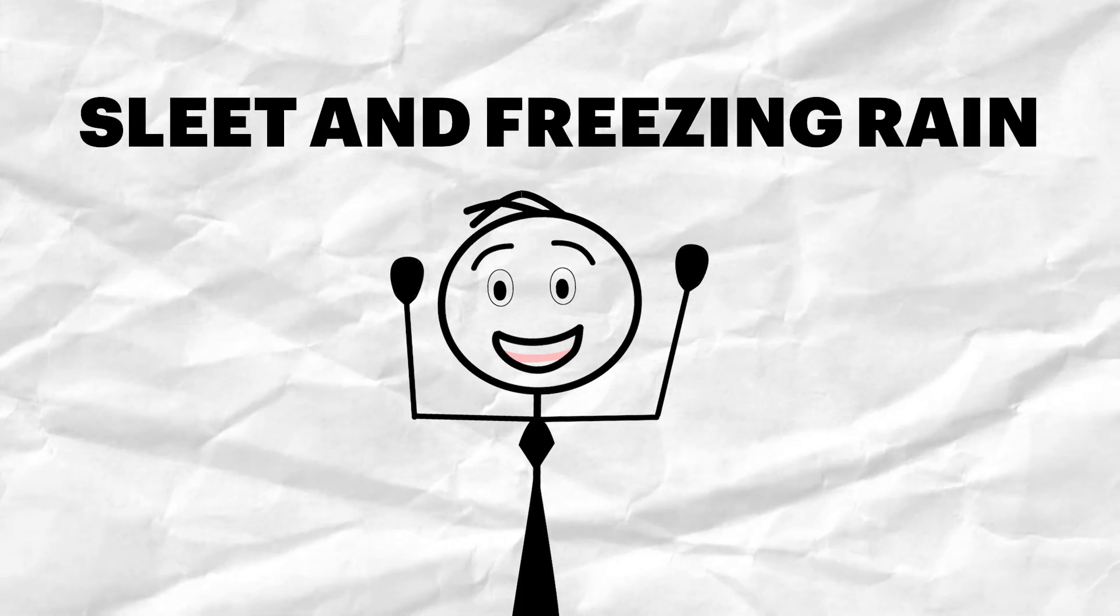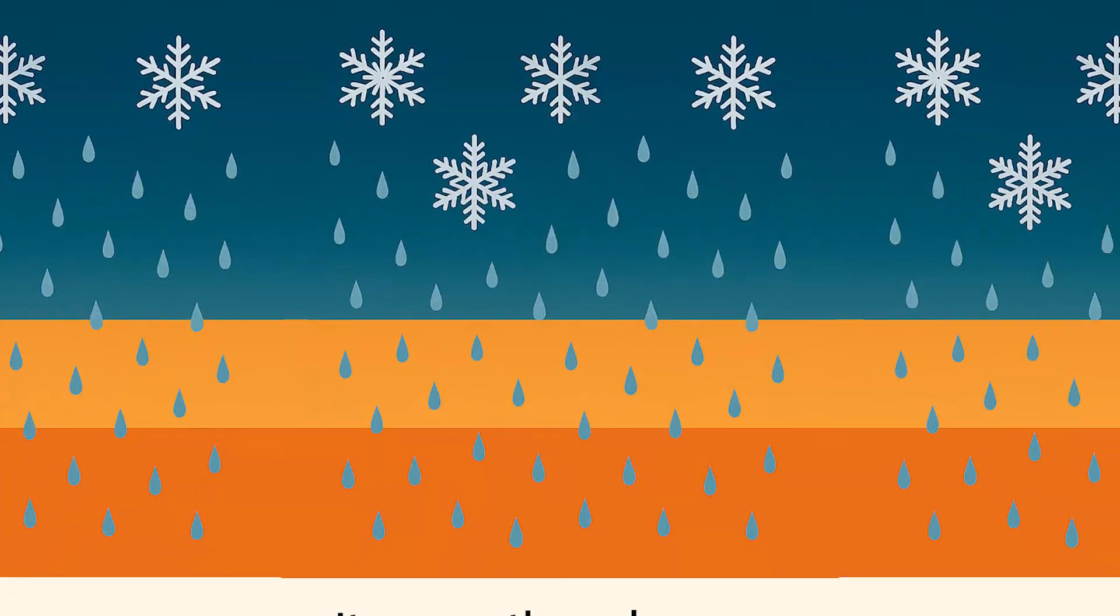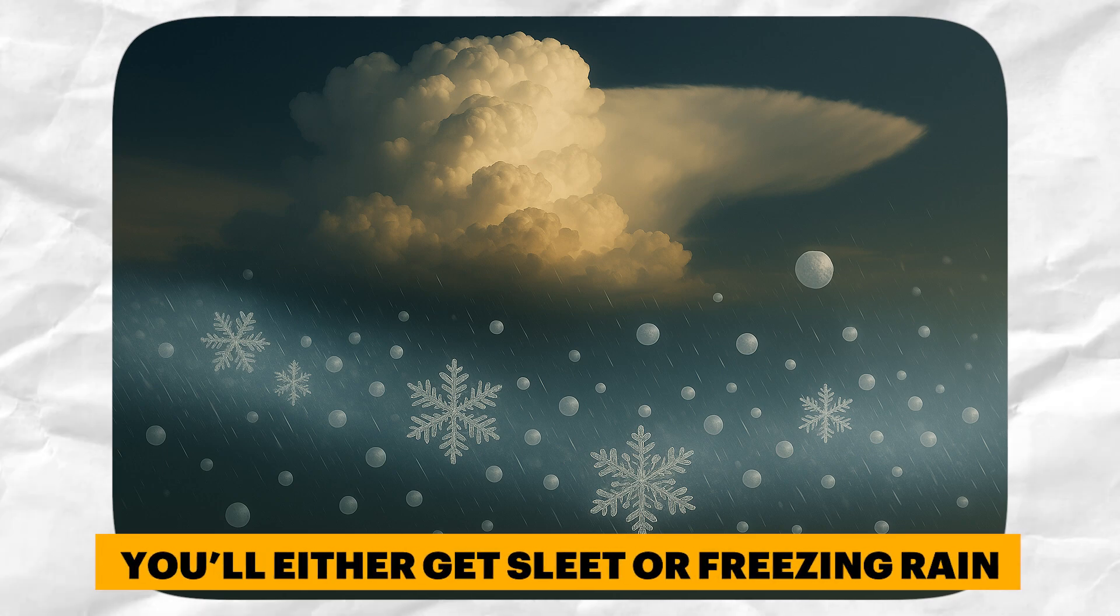Finally, we have sleet and freezing rain. Here's where things get a little tricky. Let's say precipitation starts as snow. If it passes through a warm layer of air, it melts into rain. But depending on what happens next, you get either sleet or freezing rain.